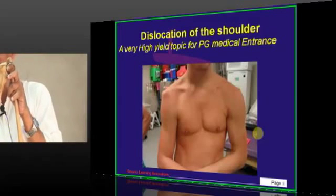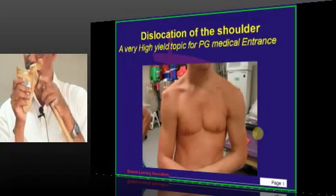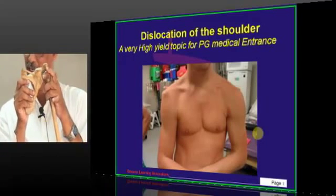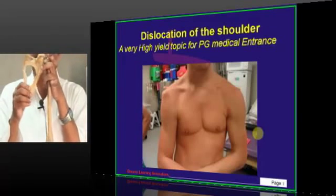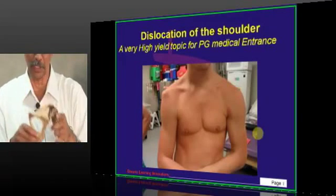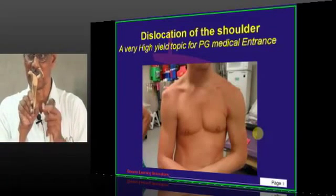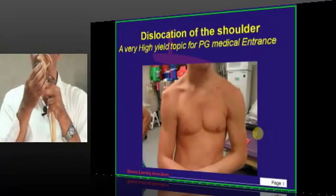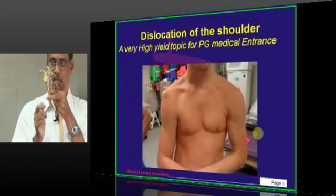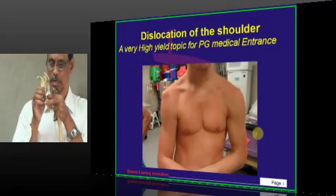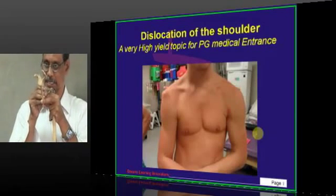But it has a deficiency in the inferior region — the inferior region is very deficient. That is why whenever there is a problem, dislocation can occur through the downward area. The scapula from the superior aspect looks like this, and from the side it looks like this — remember these views of the scapula.